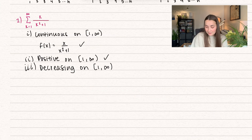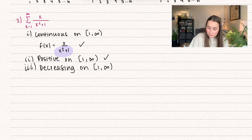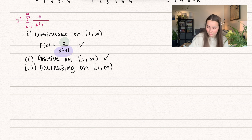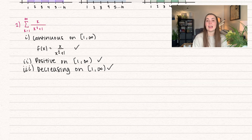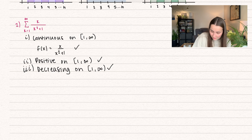And the last condition is that it's always decreasing. Notice that the denominator has x squared plus 1, which is going to be growing much more quickly than the numerator, so we have that it's decreasing on that interval. Now that all three conditions are satisfied, we can apply the integral test.